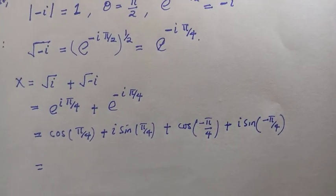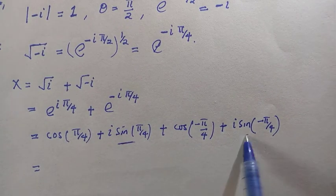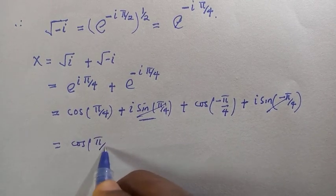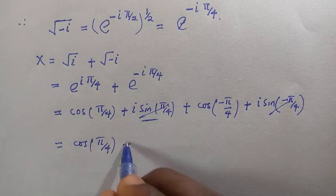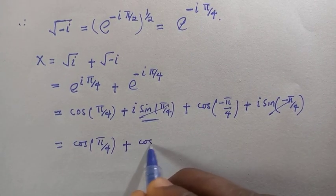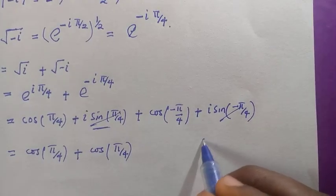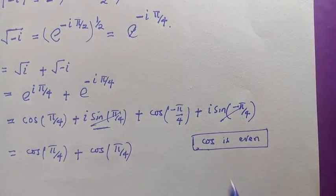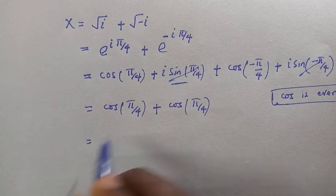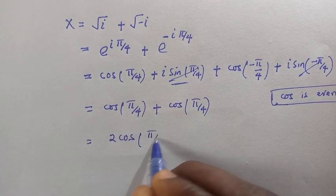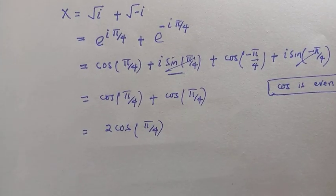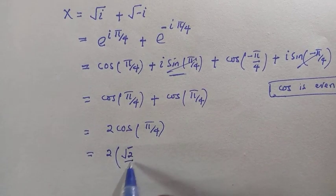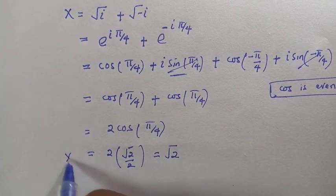Since sine is an odd function, the i·sin(π/4) and i·sin(-π/4) terms cancel each other. Since cosine is an even function, cos(-π/4) = cos(π/4), so we get 2·cos(π/4). Since π/4 = 45°, cos(45°) = √2/2, and multiplying by 2 gives x = √2.